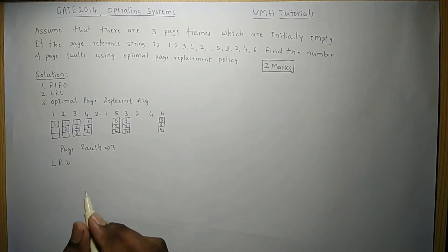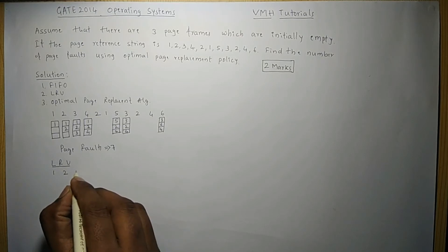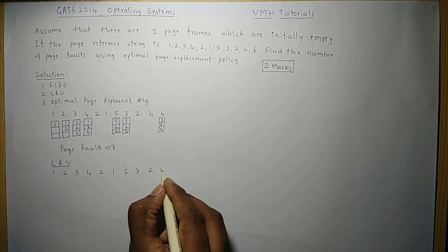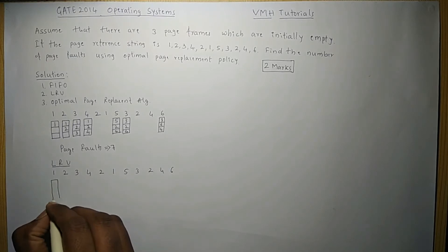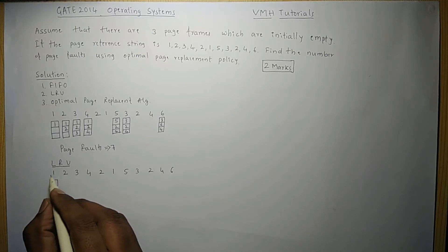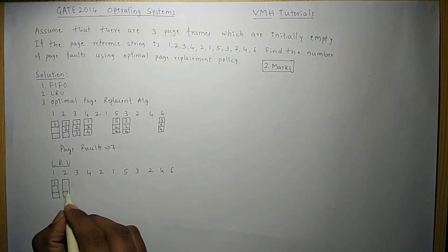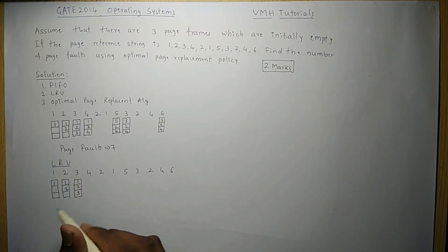In LRU we look at past references. The page reference string is again 1, 2, 3, 4, 2, 1, 5, 3, 2, 4, 6, with three initially empty page frames. Page 1 is referenced first — not available, placed in slot 1. Page 2 is referenced — not available, placed in slot 2. Page 3 is referenced — not available, placed in slot 3.